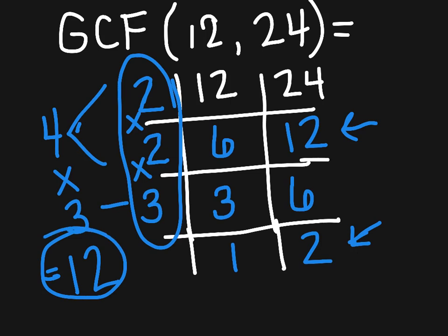This, my friends, is my greatest common factor. So by using my grid method, I know that the greatest common factor of 12 and 24 is 12.